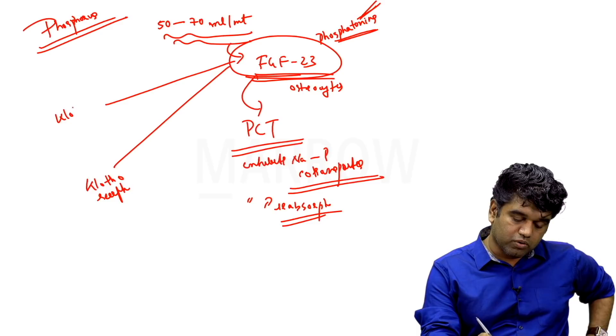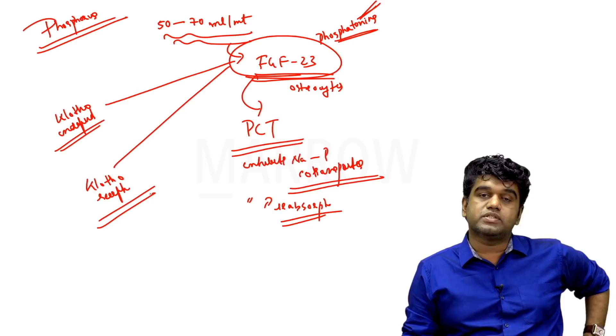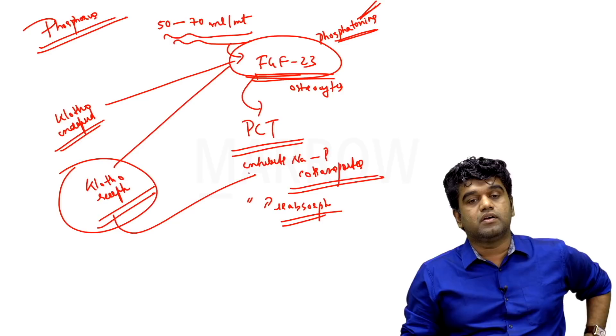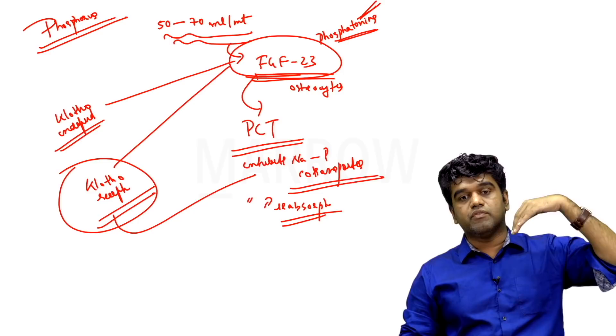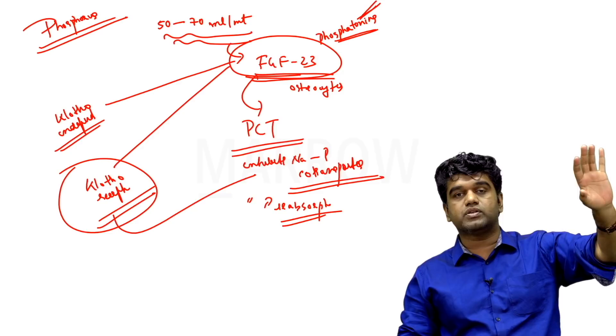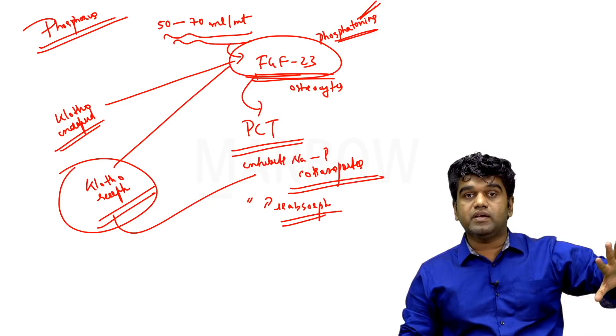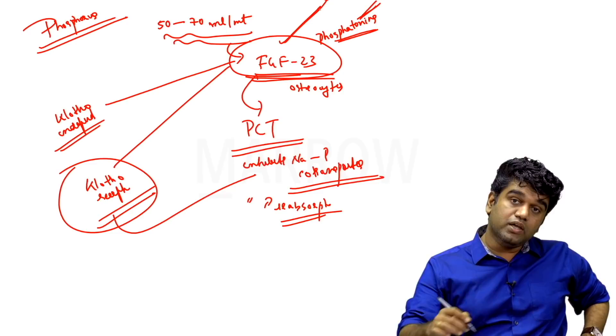FGF-23 acts through its receptor called Klotho receptor. It has also got some Klotho independent action. It has got a Klotho dependent action as well as Klotho independent action. It is via Klotho that most of the phosphorus excretion happens. Phosphorus is being handled only by the proximal tubule, not anywhere else in the nephron. If you inhibit phosphorus absorption in the proximal tubule, you are essentially excreting phosphorus and maintaining phosphorus at a near normal range.